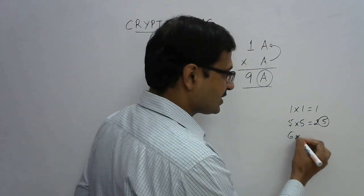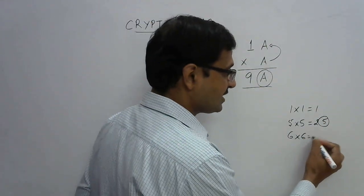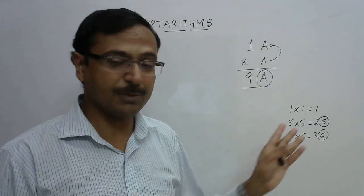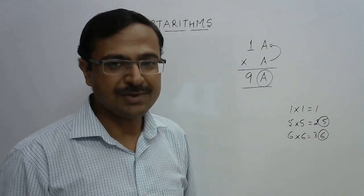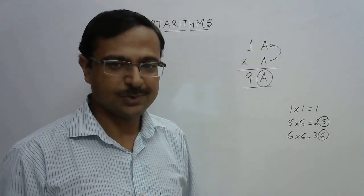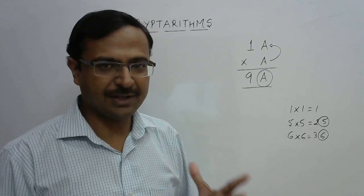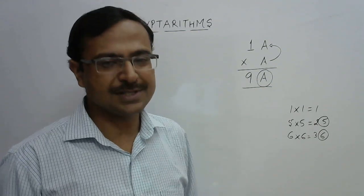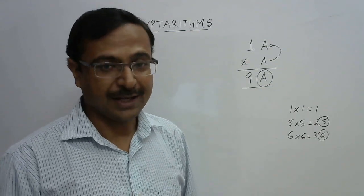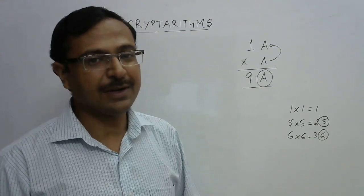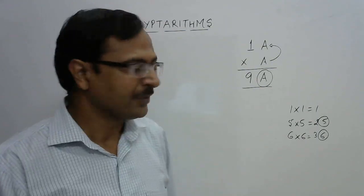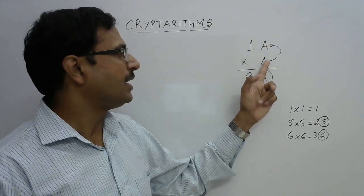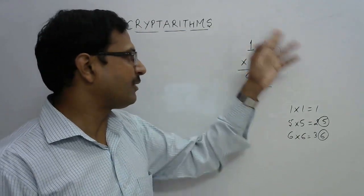Continuing: 6×6=36, so 6 in the units place — another possibility. 7×7=49, does not have 7 in the units place. 8×8=64, not possible. 9×9=81, not possible. And 0 cannot come here since 0×0 makes everything 0. So our possible values of a are 1, 5, and 6.